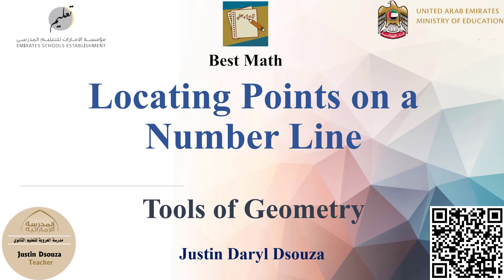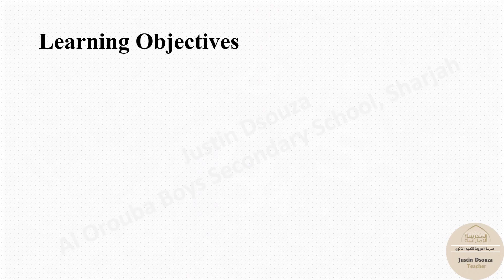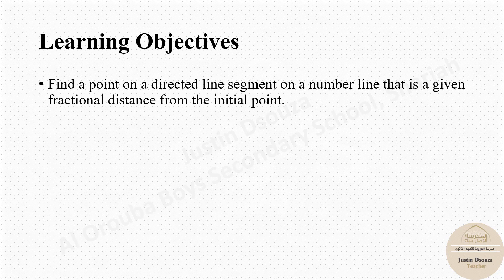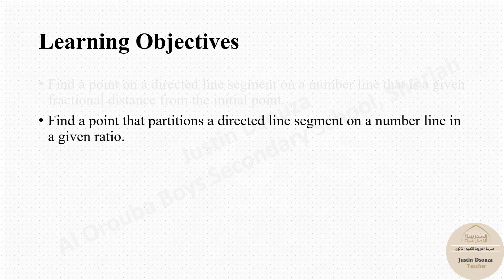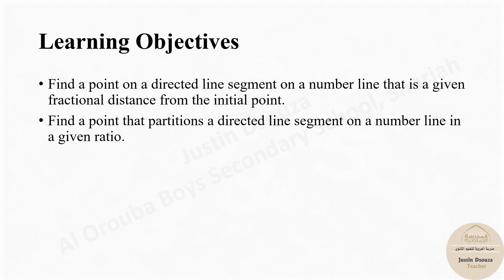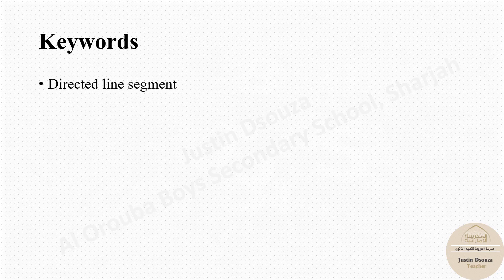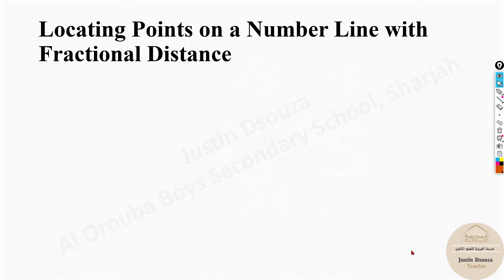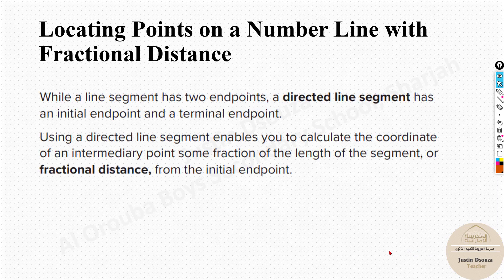Locating points on a number line, by Justin D'Souza. The learning objectives are to find a point on a directed line segment on a number line that is given a fractional distance from the initial point, and to find a point that partitions a directed line segment on a number line in a given ratio. The keywords are directed line segment and fractional distance. Before we look at fractional distance and ratio distance, let us first understand what a directed line segment is.